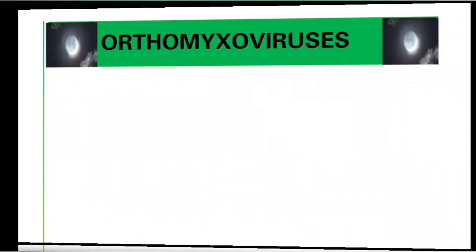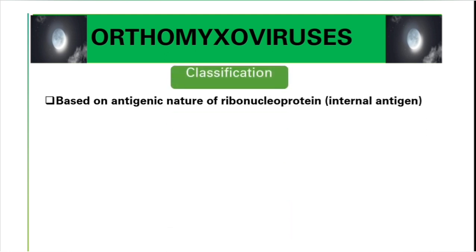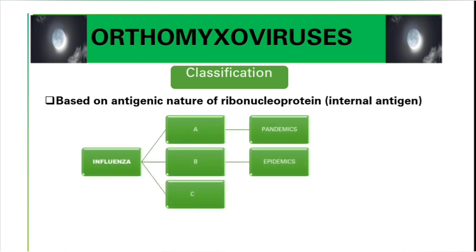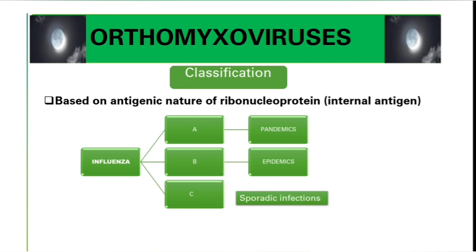Now let's talk about the classification of influenza viruses. Based on the antigenic nature of the ribonucleoprotein, which is the internal antigen, there is Influenza A, Influenza B, and Influenza C. Influenza A is responsible for pandemics, Influenza B is responsible for epidemics, and Influenza C is responsible for sporadic infections.